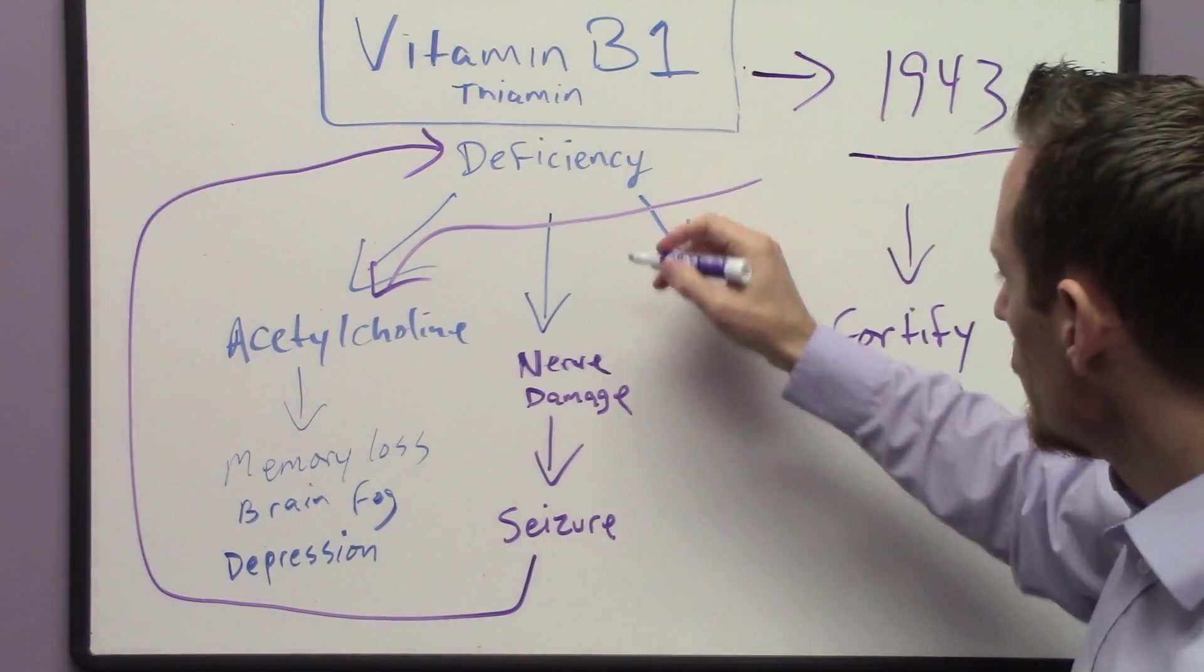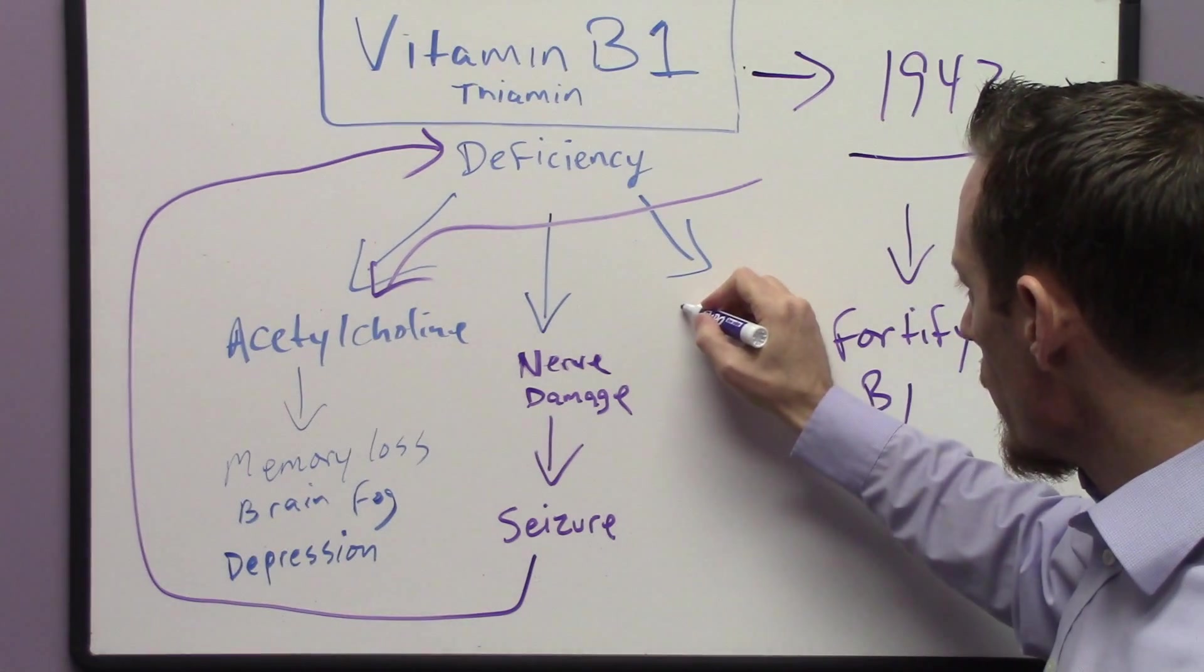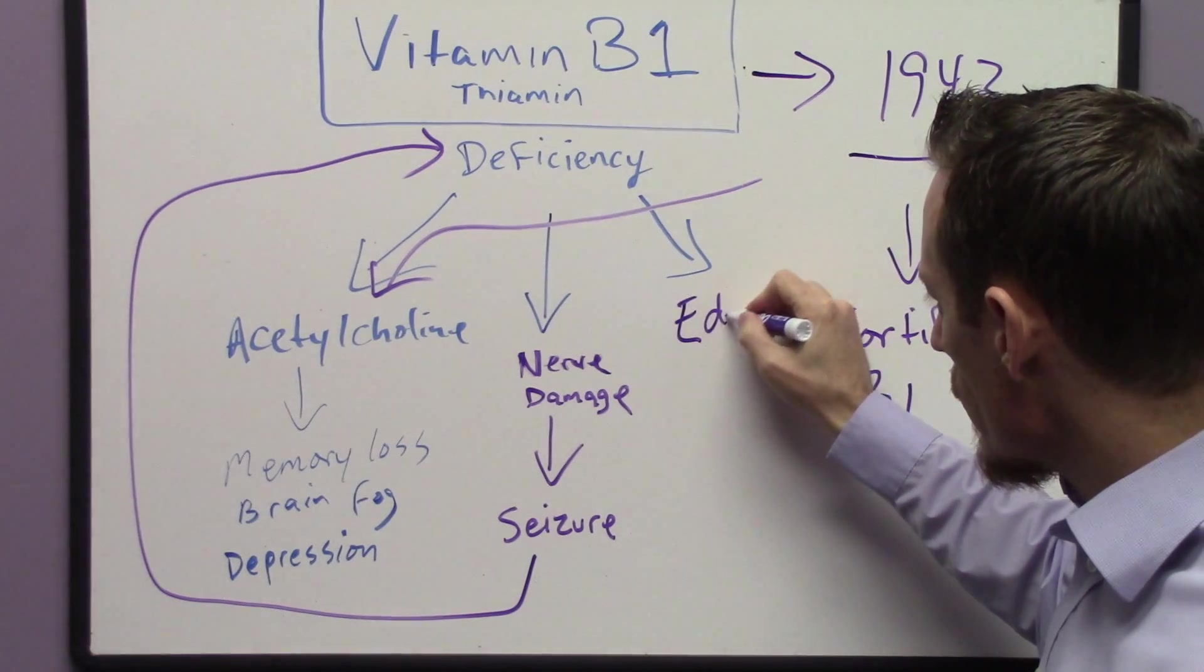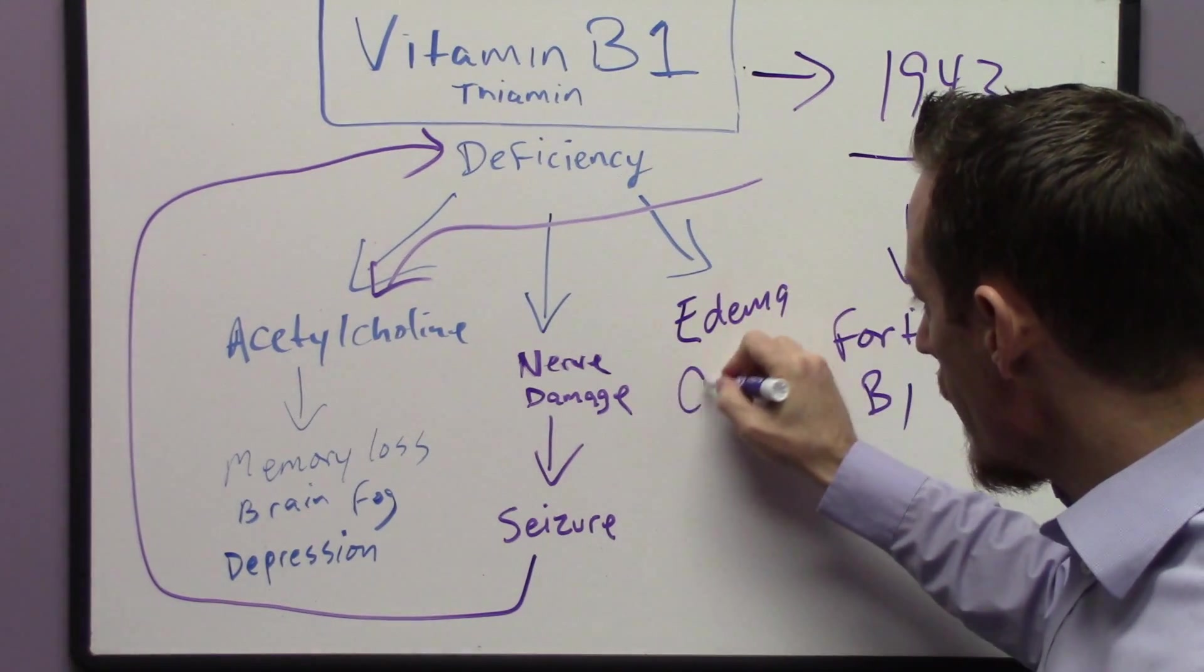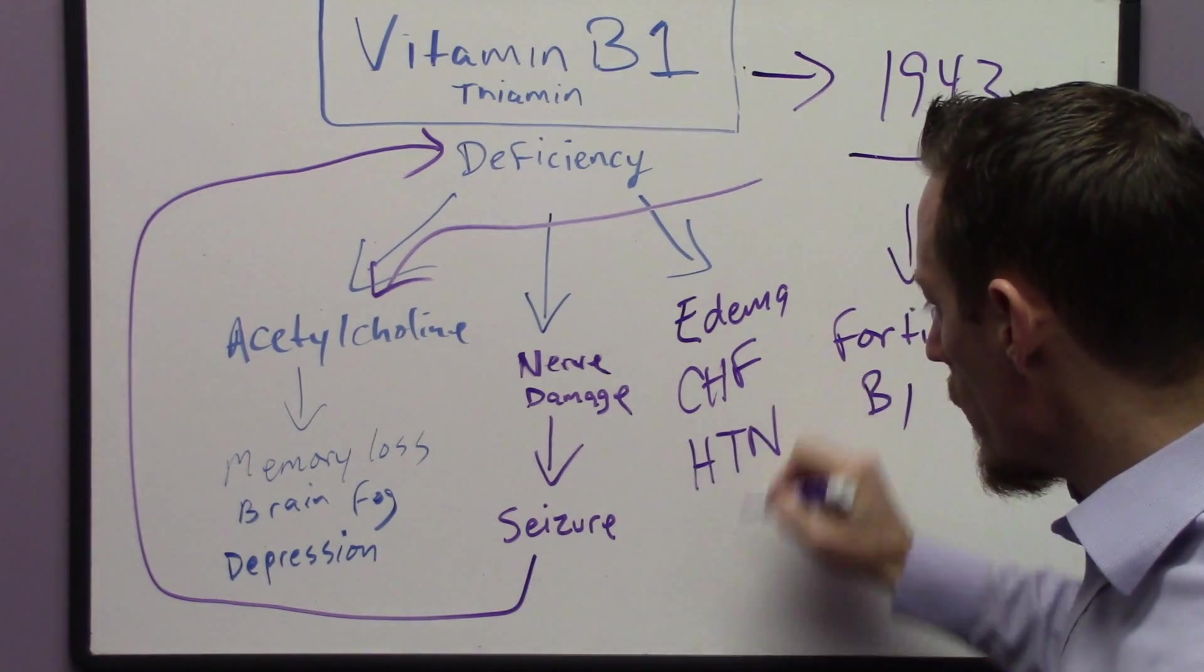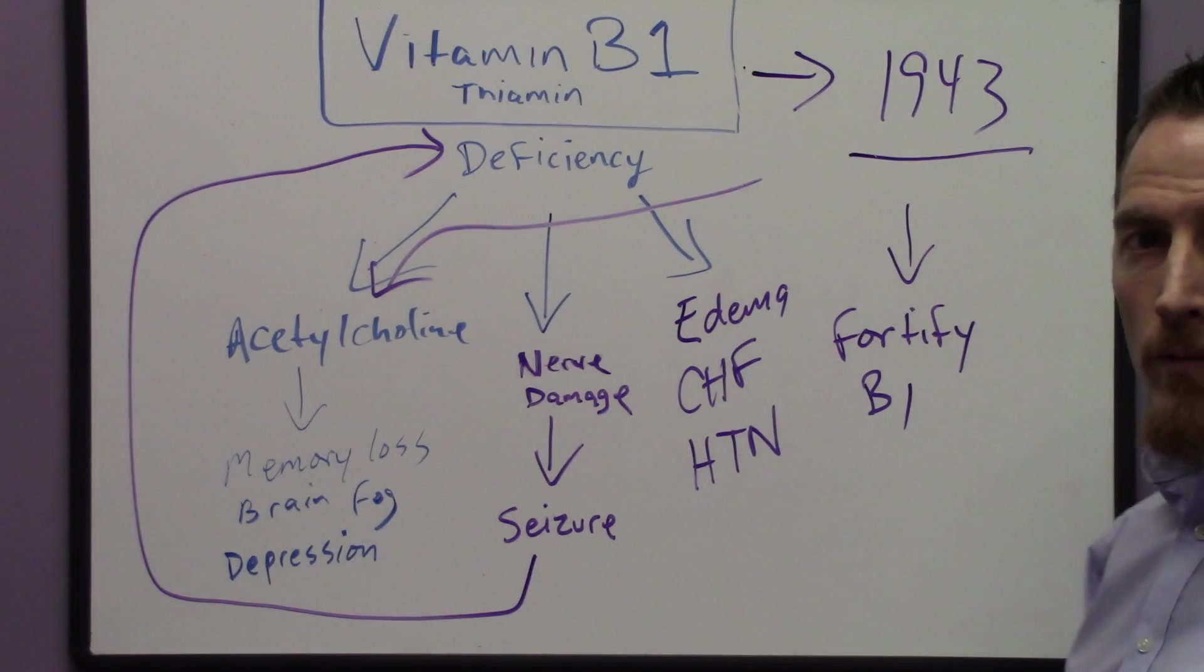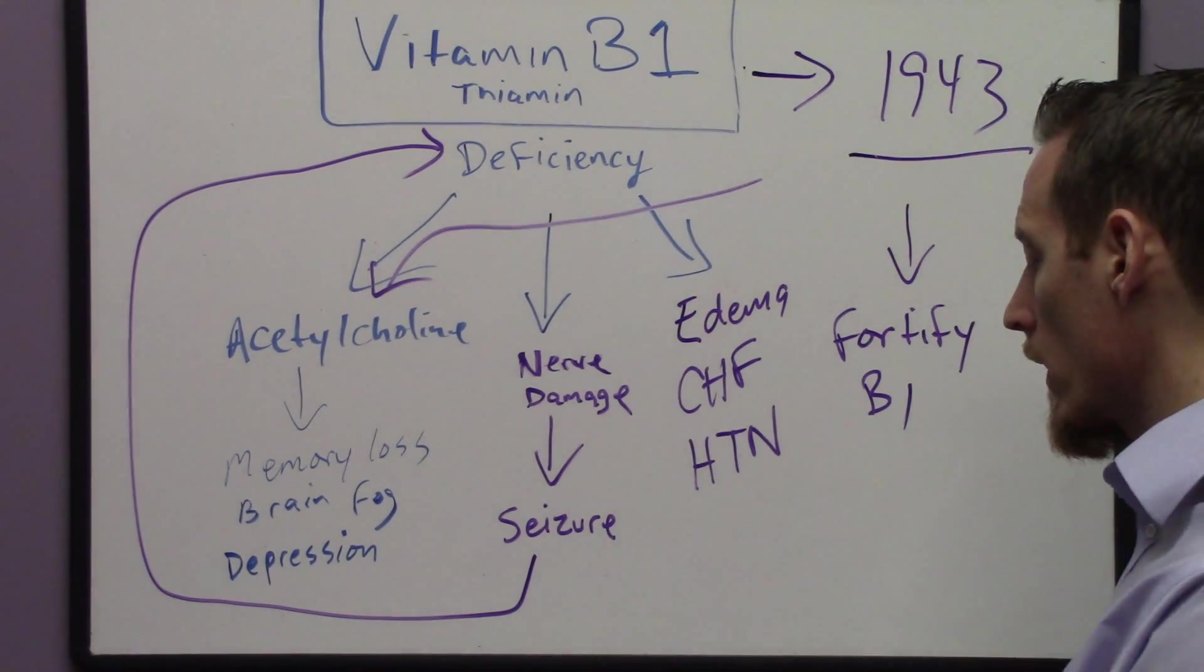Now, something else that I mentioned a minute ago I want to touch back on is that over here we said congestive heart failure, edema, congestive heart failure, but also high blood pressure, hypertension is one of the manifestations of that wet beriberi or that form of vitamin B1 deficiency as it affects the heart.